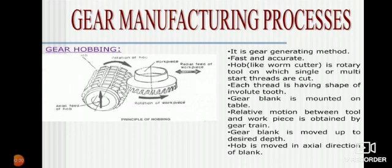Each thread is having a shape of involute tooth. Gear blank is mounted on the table. Relative motion between tool and workpiece is obtained by gear train. Gear blank is moved up to desired depth. Hob is moved in axial direction of the blank.